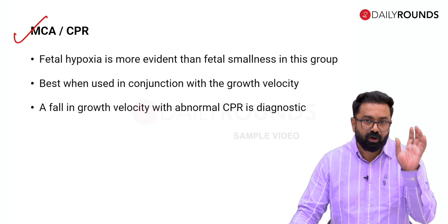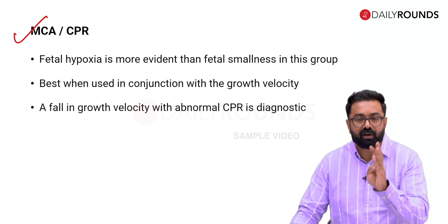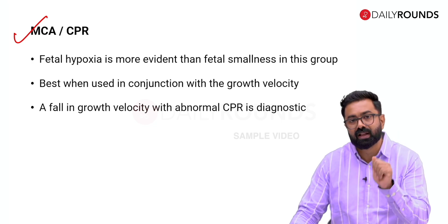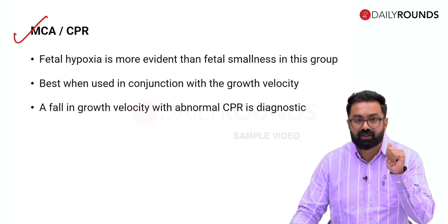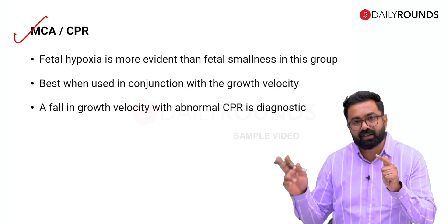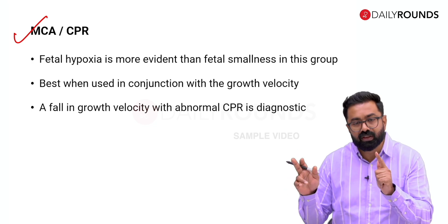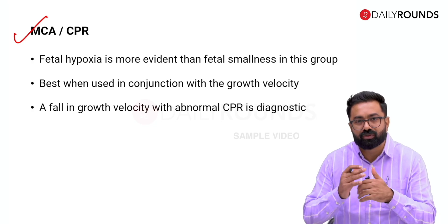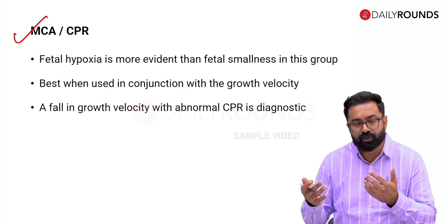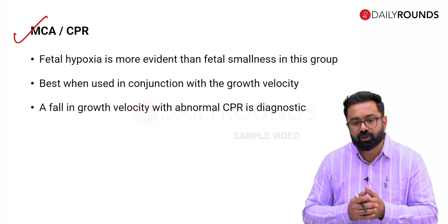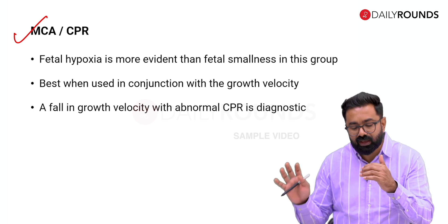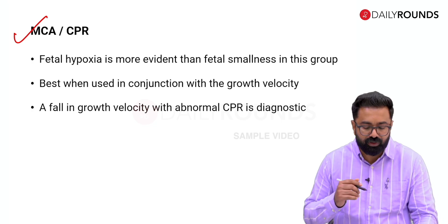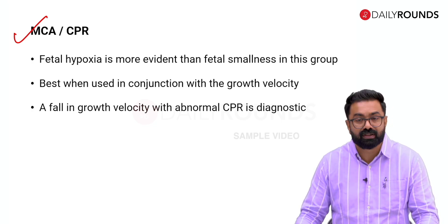In SGA, a small baby with either an abnormal umbilical artery, abnormal MCA/CPR/uterine, or estimated fetal weight less than the 3rd centile is classified as growth restricted. In an AGA baby, a fall in centiles of more than 50 centiles across growth scans combined with an abnormality in CPR — indicating the brain is compensating for hypoxia — would be your diagnostic criteria for FGR in an appropriately grown fetus.